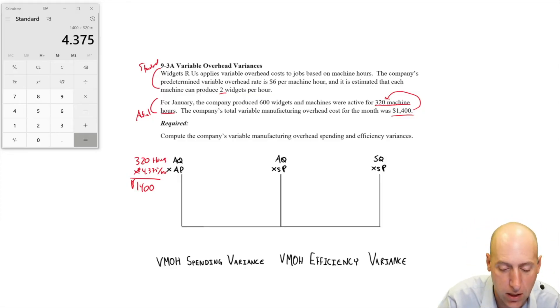Let's move over to AQ SP. 320 is our AQ still in hours. Our standard price per hour, we would expect to spend $6 per machine hour. That's our given overhead rate. 320 times six is 1920.